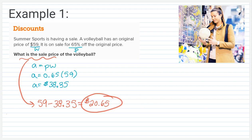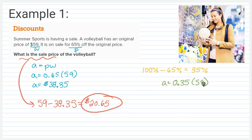If we're going to solve this in one step, we have to remember that if the original price is 100%, you are taking off 65% of that value, so what you're left paying is 35% of the original price. Using A equals P times W, we use 35% written as 0.35 and multiply by $59. So 0.35 times 59 gives us $20.65 — our final sale price in one step. A really nice strategy, especially if you're trying to be more efficient.